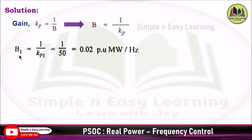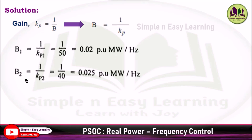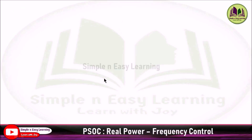Since Kp values are given, B = 1/Kp. For area 1: B1 = 1/Kp1 = 1/50 = 0.02 pu-MW/Hz. For area 2: B2 = 1/Kp2 = 1/40 = 0.025 pu-MW/Hz.